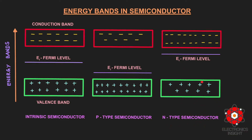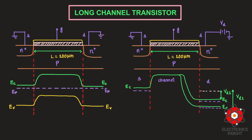For an n-type semiconductor doped with pentavalent atoms such as arsenic, antimony, and phosphorus, the fifth valence electron — which is loosely bound — can be easily excited from the valence band to the conduction band. Therefore the concentration of electrons in the conduction band exceeds that in the valence band, and hence the Fermi level shifts upwards near the bottom of the conduction band for an n-type semiconductor.